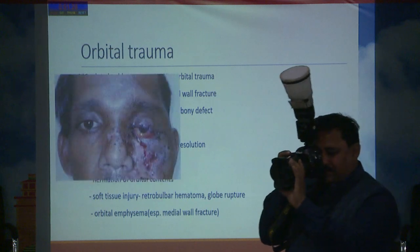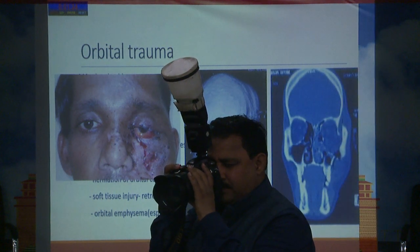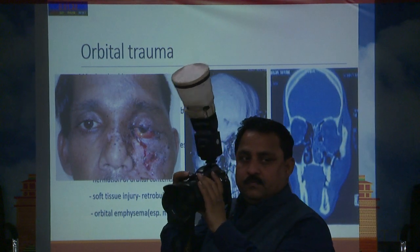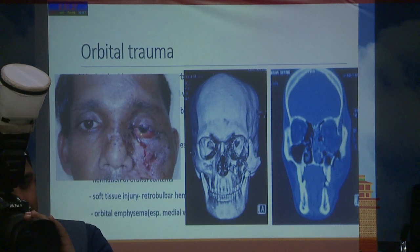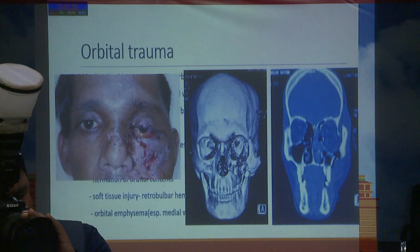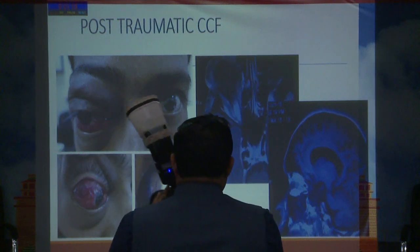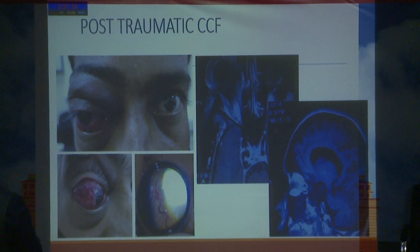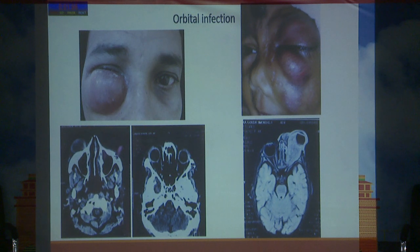In cases of orbital trauma where we have to look for orbital blowout fractures and plan surgical intervention, CT is best. MRI can be requested if we suspect a wooden foreign body, and if we suspect a carotico-cavernous fistula, we have to go for MRI. Otherwise CT is the best option.